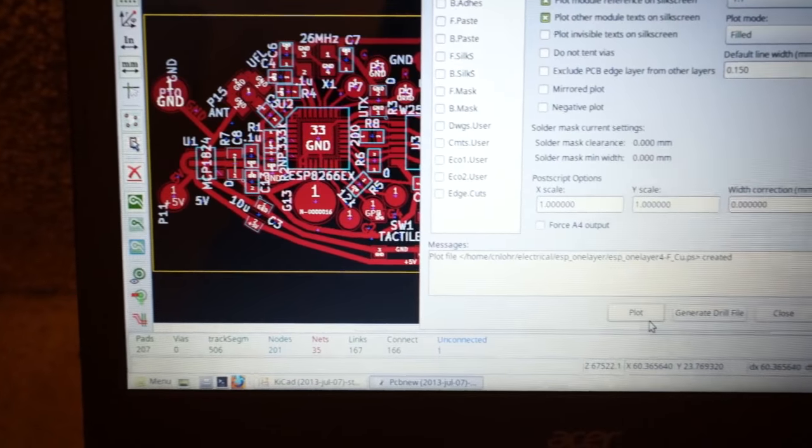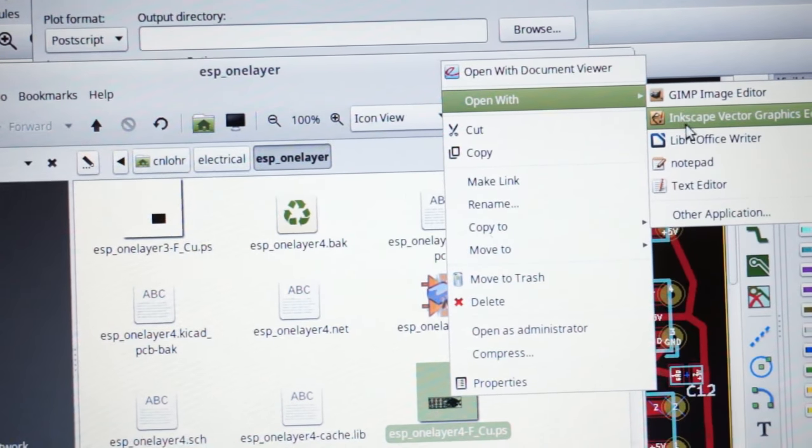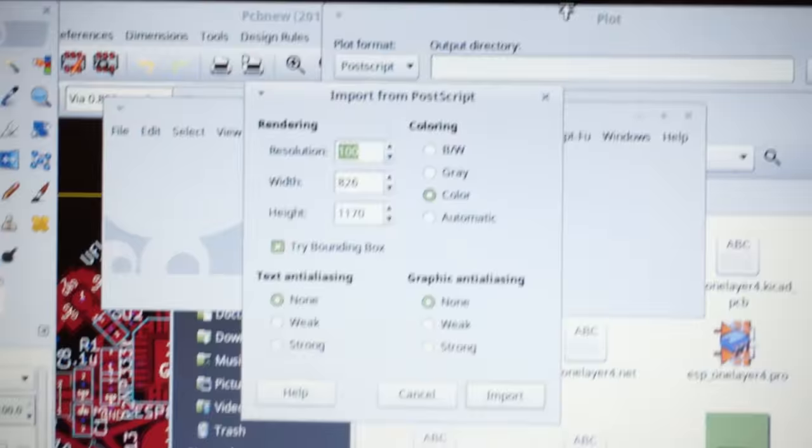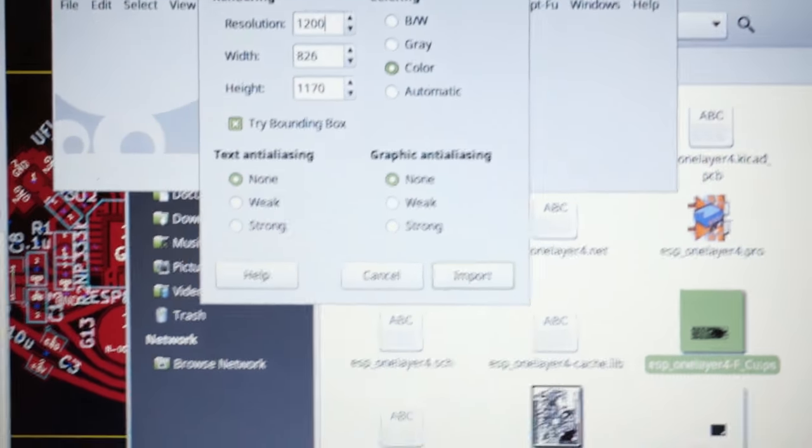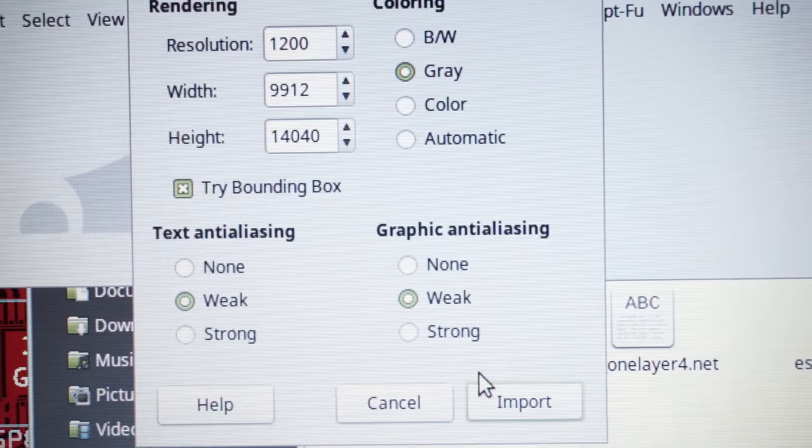So now I can export as a postscript file. This is a vector format, which isn't really that useful for a lot of things, so I import it into GIMP. You can do just about any editor, Photoshop, whatever. Grayscale and a little bit of anti-aliasing really helps out.